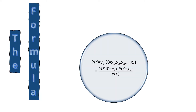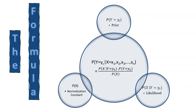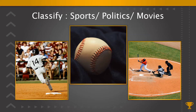Now let us dissect the formula and see its various parts, and in detail see how to calculate the components on the right-hand side. The formula states: probability of Y equals a class given X equals a set of features equals probability of X given Y times probability of Y divided by probability of X. Here, probability of Y equals yc is called the prior, probability of X given Y equals yc is the likelihood, and P(X) is called the normalization constant.